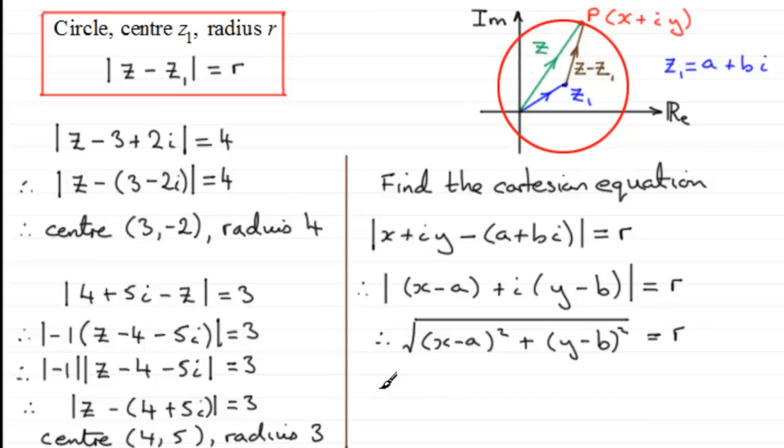And if we square both sides, we therefore have X minus A all squared plus Y minus B all squared is equal to R squared. And this is our Cartesian equation for the equation of a circle. And you should be familiar with this from your coordinate geometry of the circle. So XY any point on the circle, AB the centre, and R the radius.